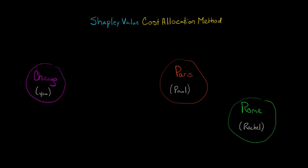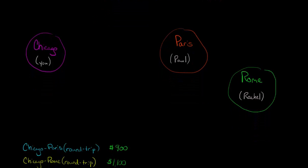One way you could do it is you could fly round trip to Paris for $900. You could fly round trip to Rome for $1,100, so you're making two separate journeys, and that would cost you a total of $2,000.